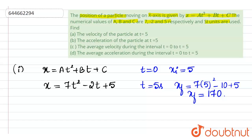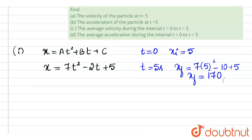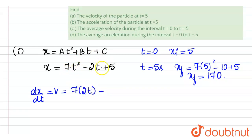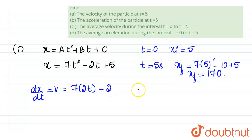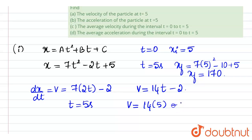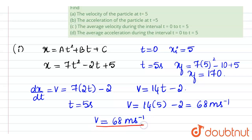Now, to find out the velocity, we know that we can find velocity by differentiating position once. Therefore, dx/dt equals v. On differentiating, velocity will be equal to 14t minus 2. So at t equals 5 seconds, we get velocity as 14 into 5 minus 2, which is 70 minus 2, equal to 68 meters per second. Therefore, velocity will be equal to 68 meters per second at time t equals 5 seconds.